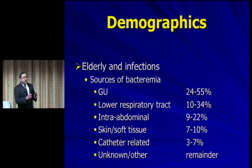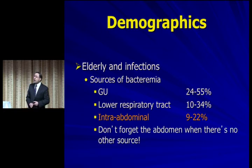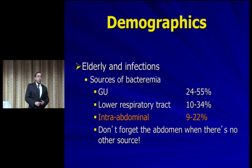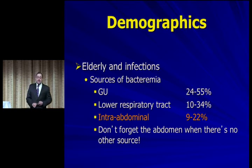I'm going to highlight key points with colored font. Up to 20% of all elderly patients with bacteremia have a source in the belly — not typically a place I'm thinking about. Please remember this: don't forget about the abdomen when a clear-cut source is not present on your basic workup. Check the belly. Think about getting an ultrasound or CT if necessary when you can't find the source. That's key point number one.